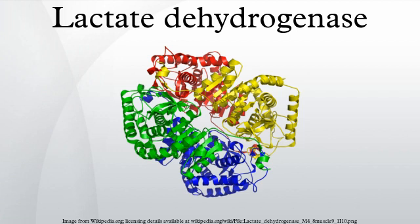The increased NADH/NAD+ ratio can also cause hypoglycemia in a fasting individual who has been drinking and is dependent on gluconeogenesis to maintain blood glucose levels. Alanine and lactate are major gluconeogenic precursors that enter gluconeogenesis as pyruvate. The high NADH/NAD+ ratio shifts the lactate dehydrogenase equilibrium to lactate, so that less pyruvate can be formed and, therefore, gluconeogenesis is impaired.